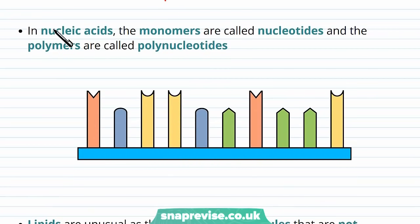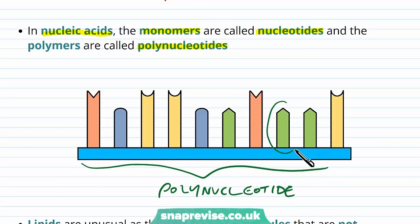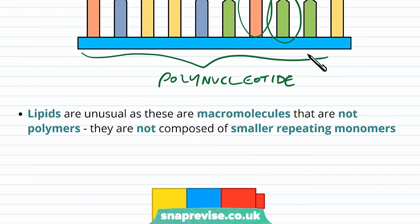In nucleic acids, we have the monomers known as nucleotides. And polymers are polynucleotides. Sometimes you will see it as mononucleotides as well. So here's a string of nucleotides as a polynucleotide. And one of these single units would be a nucleotide. So hopefully you can see the similarities between these groups as we go through.